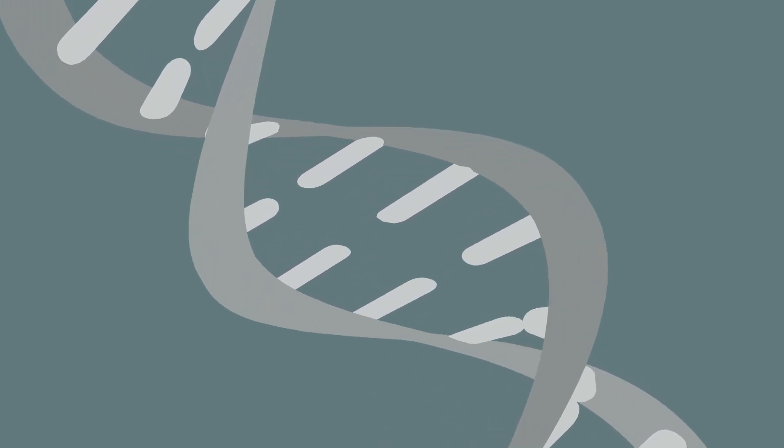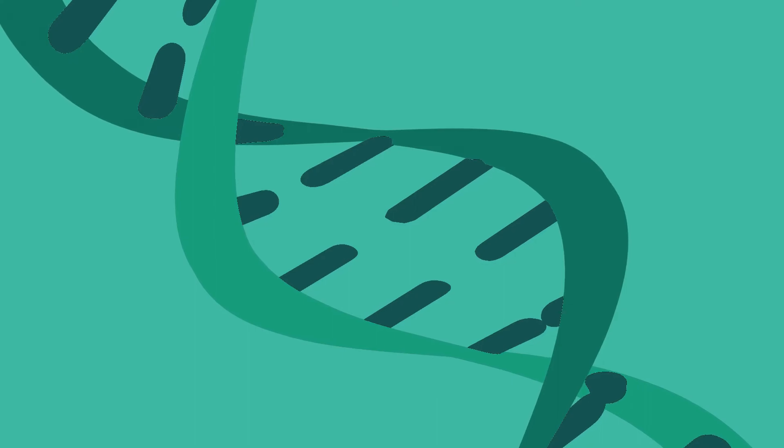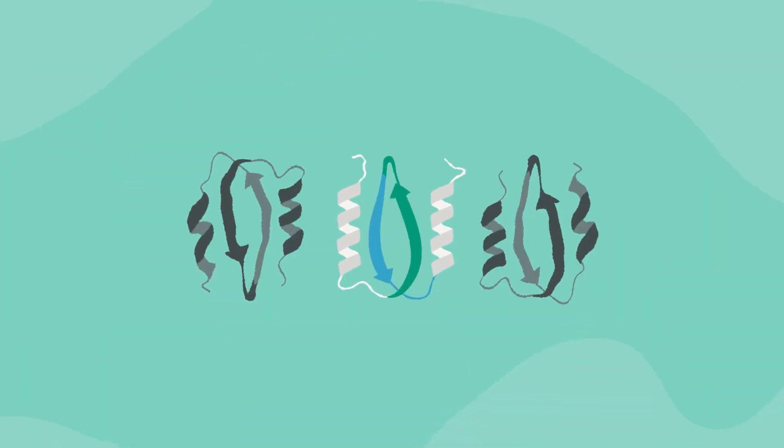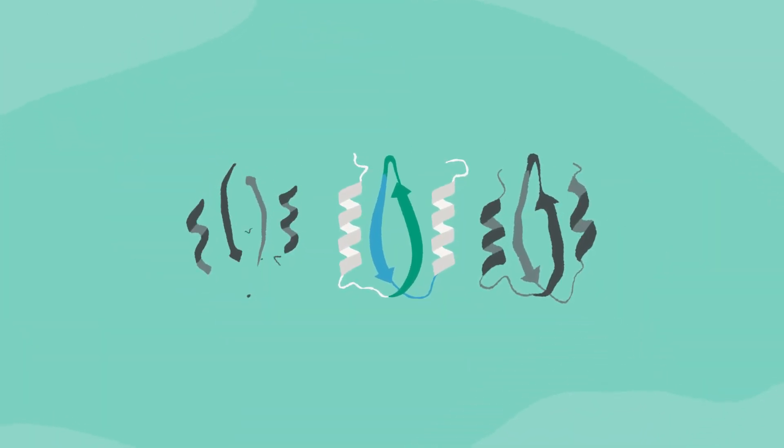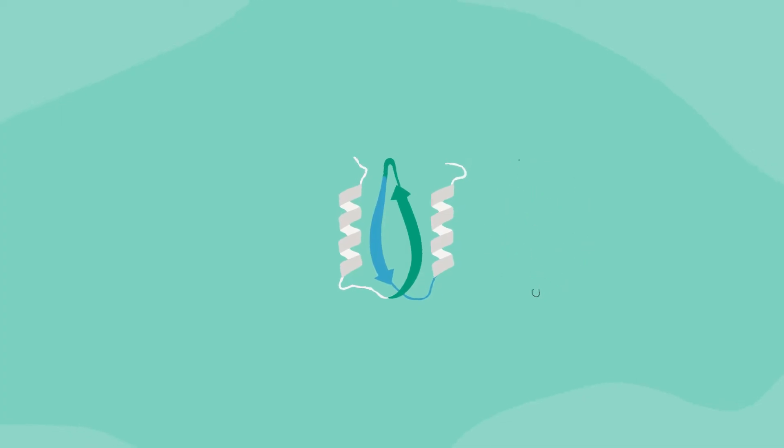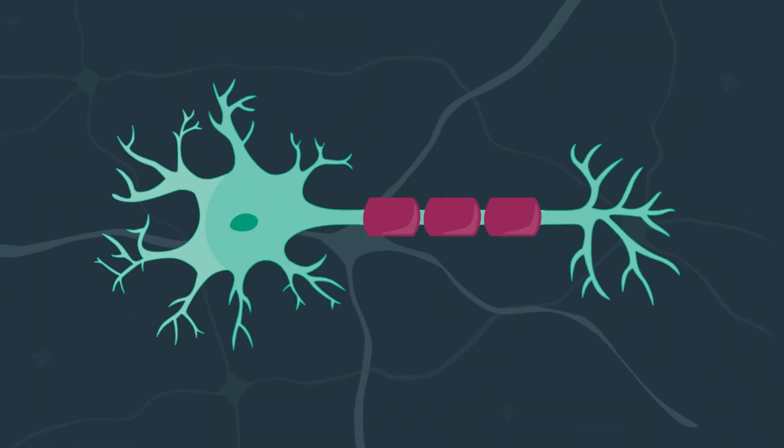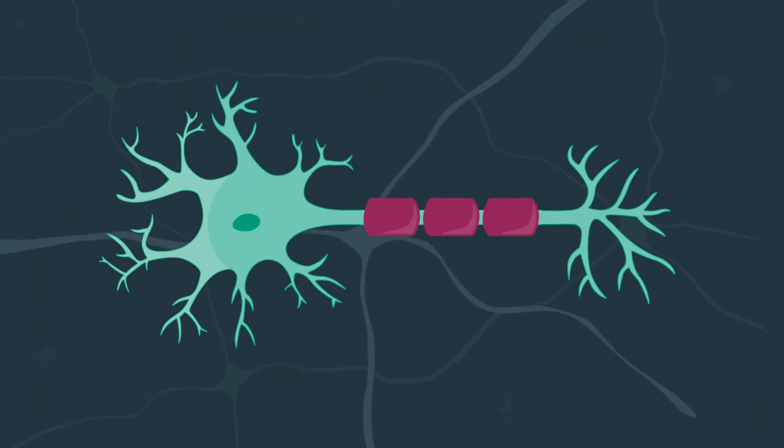Gene therapy typically changes how cells produce important proteins by replacing a gene that is missing or abnormal. In the case of Huntington's, gene therapy would actually help lower the cell's production of the toxic HTT protein, ideally slowing the breakdown of neurons in the brain.